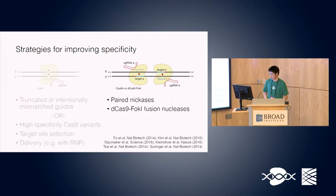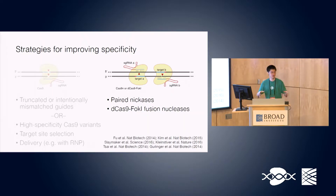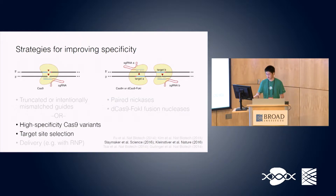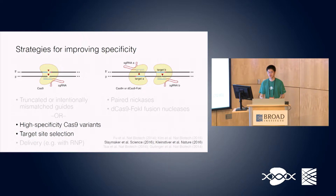The second set of strategies involves using two guides at the same time to target one genetic locus — for example, by using paired nickases or by fusion proteins with Cas9 and other nonspecific nuclease domains to get dimerization. What I want to focus on today is specifically using high-specificity Cas9 variants along with optimal target site selection as a straightforward means to improve genome editing specificity without major modifications to existing workflows.